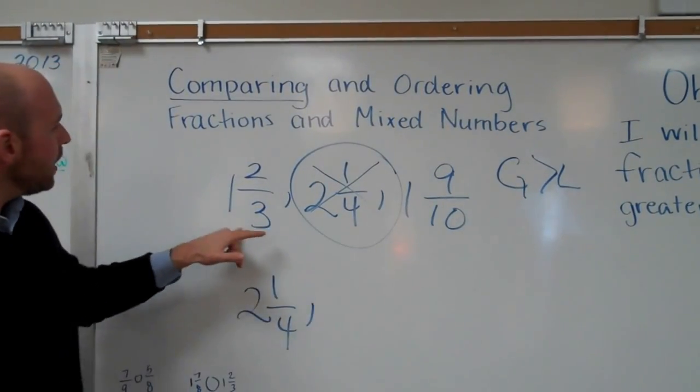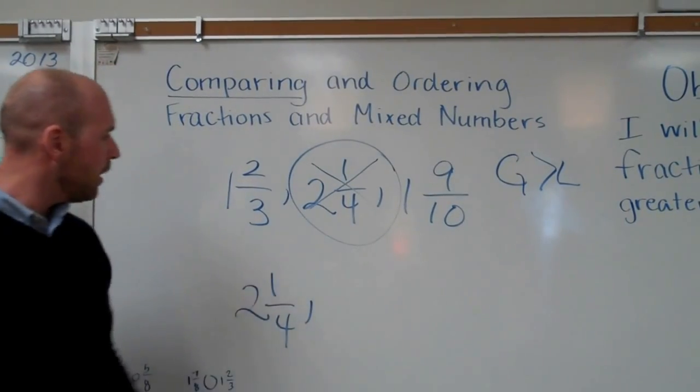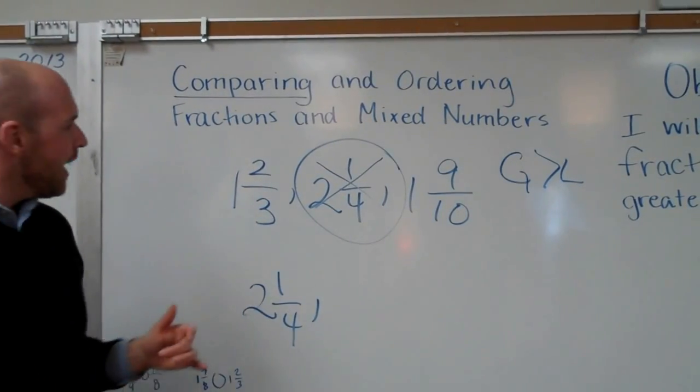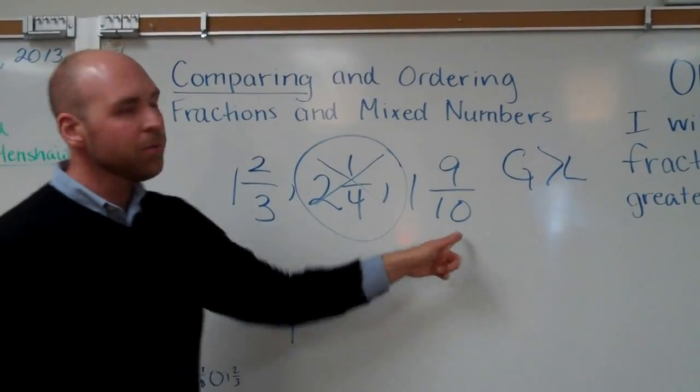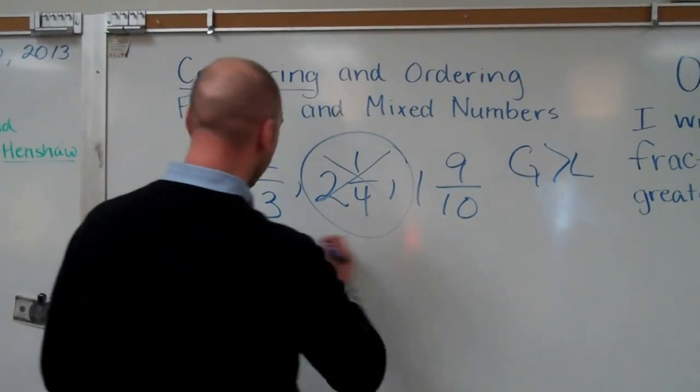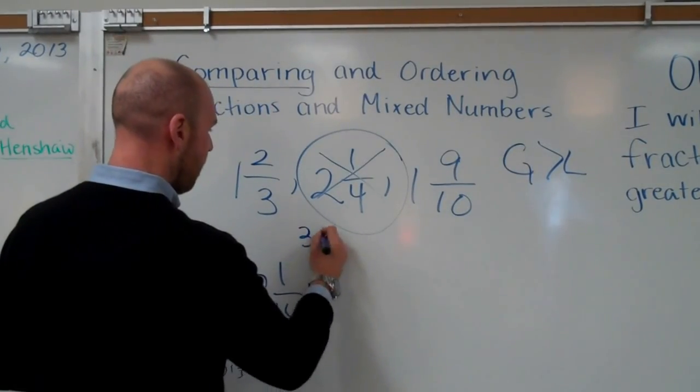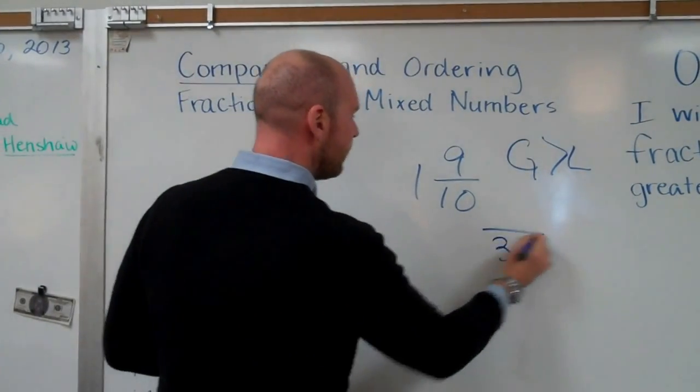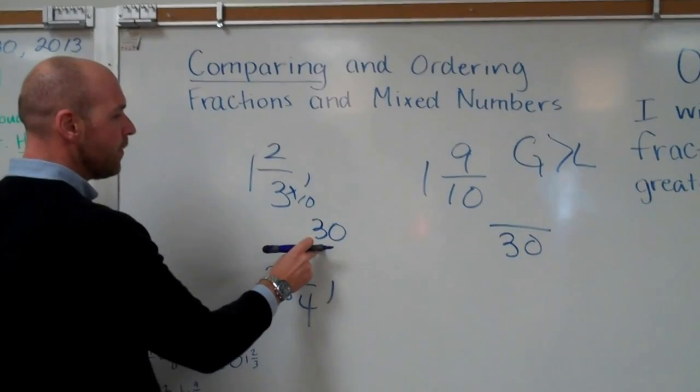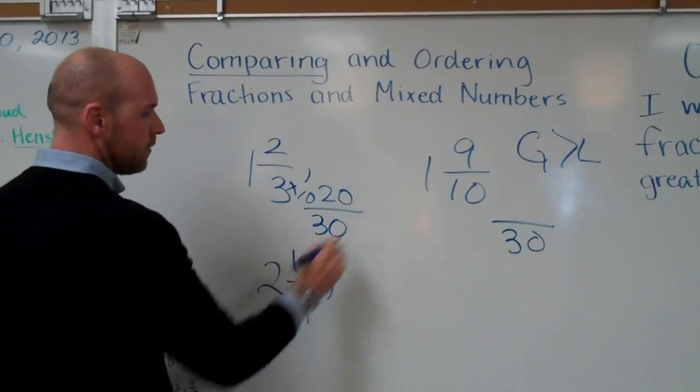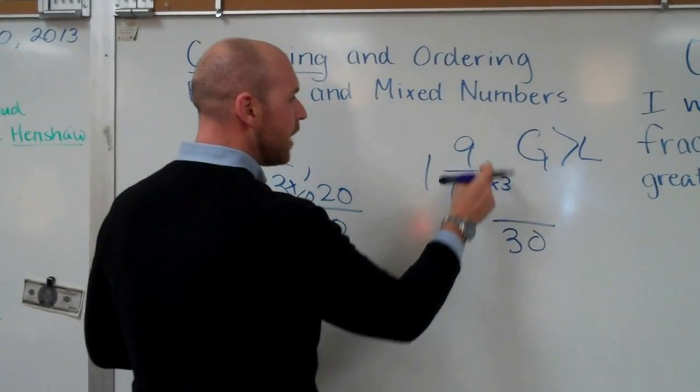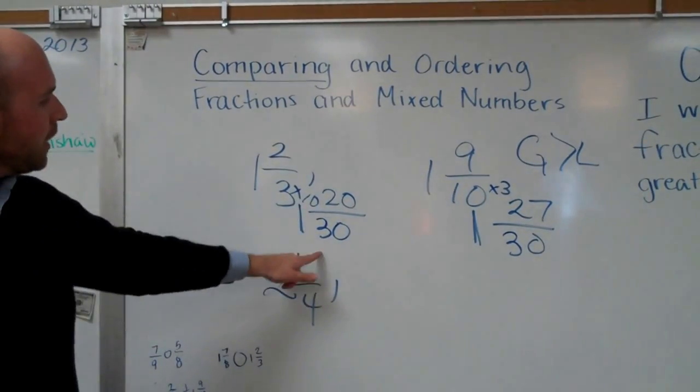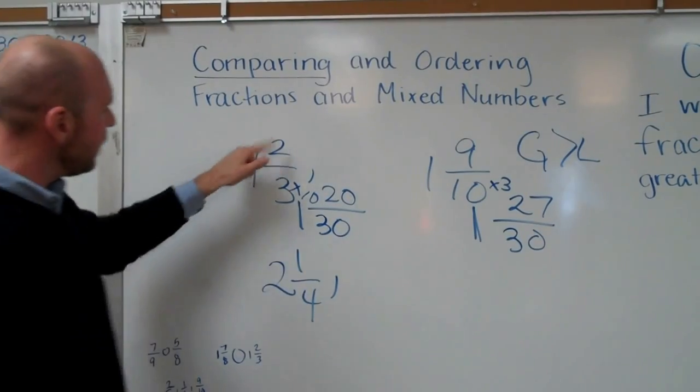So now, I'm going to compare one and two-thirds and one and nine-tenths. I'm not going to mess with this one anymore. Now, I need to pick a new denominator for these. And I'm not going to go through the multiples thing. I'm just going to multiply three times ten because I know that's going to work. So I have thirtieths. Three times ten equals thirty. So two times ten equals twenty. Ten times three equals thirty. So nine times three equals twenty-seven. One and twenty-thirtieths. One and twenty-seven-thirtieths.